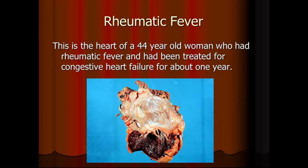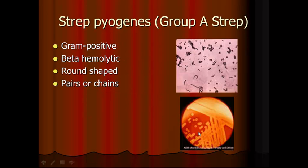This is the heart of a 44-year-old woman who had rheumatic fever because of untreated strep infection, which caused congestive heart failure for about one year and she eventually passed away. This whole black area is dead tissue. Strep pyogenes, or group A strep, is gram positive, so it is purple in color. It is beta hemolytic, so it likes to grow on sheep's blood agar. It is round in shape and usually in either pairs or chains, hence the name Streptococcus.